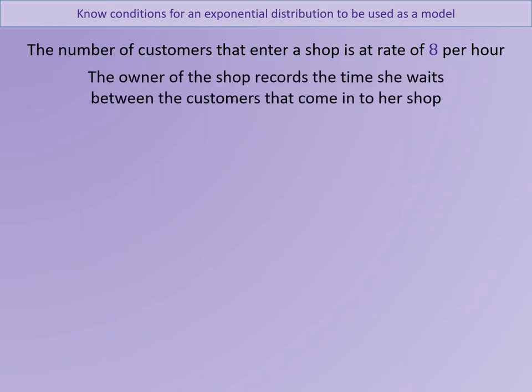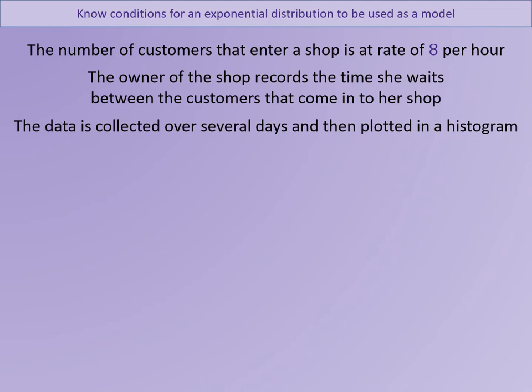Rather than doing a Poisson distribution, think about this: the owner records the time she waits between customers. Poisson distribution is a discrete random variable — you can only count the number of people coming into your shop. But she's changing it from a discrete variable into a continuous variable because she's recording the time between customers. When a customer leaves, she sets a timer until the next customer comes in.